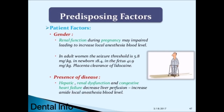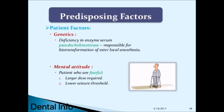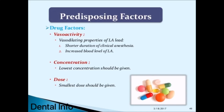Gender: renal function during pregnancy may be impaired, leading to increased local anesthesia blood levels. In adult women, the seizure threshold is 5.8 mg/kg; in newborns 18.4 mg/kg; in the fetus 41.9 mg/kg. Presence of disease: hepatitis, renal dysfunction, and congestive heart failure decrease liver perfusion and increase amide local anesthesia blood levels. Deficiency in the enzyme serum pseudocholinesterase is responsible for biotransformation of ester local anesthesia. Mental attitude: fearful patients require a larger dose and have a lower seizure threshold.